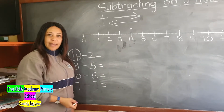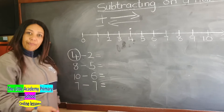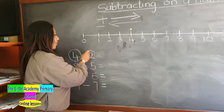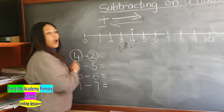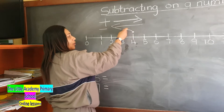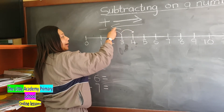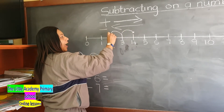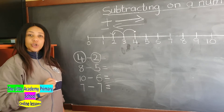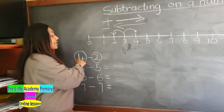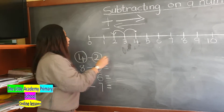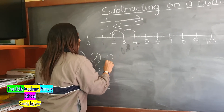So how many times are we going to move backwards? We take the next number, which is 2, which means we are moving 2 times backwards — 1, 2 — and we end at the number 2. So which means 4 subtract 2 is 2.